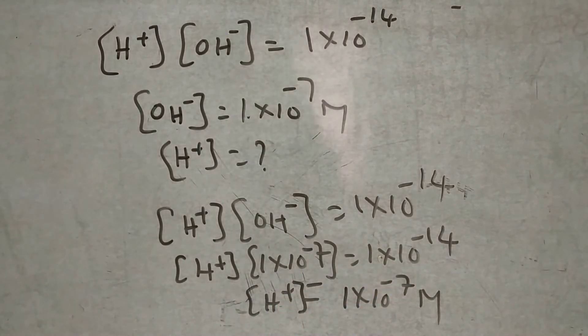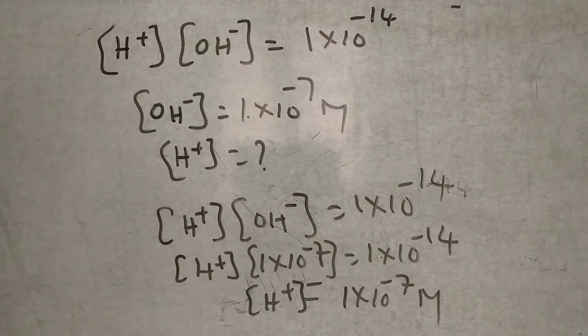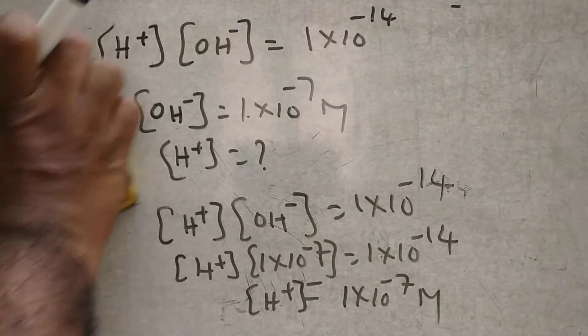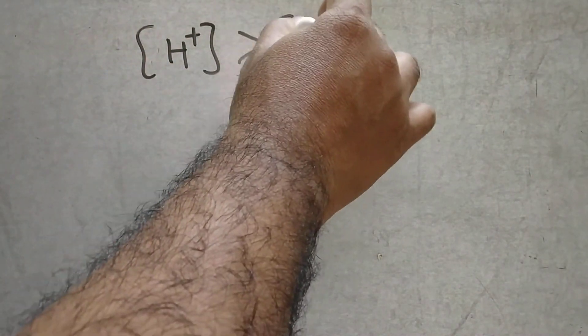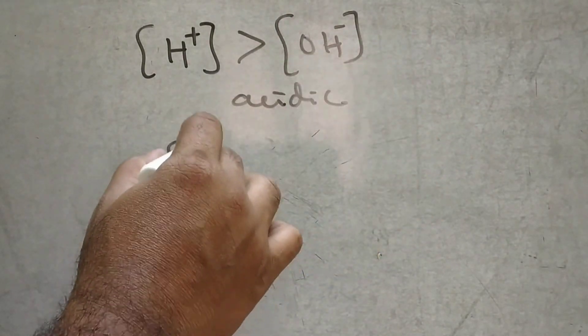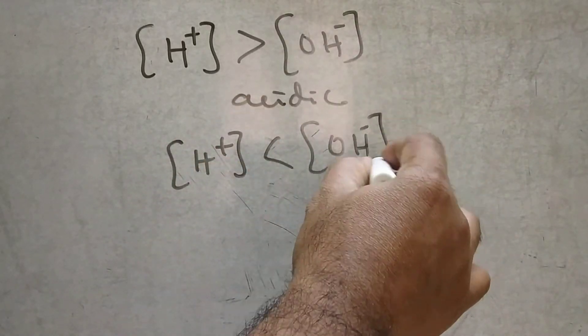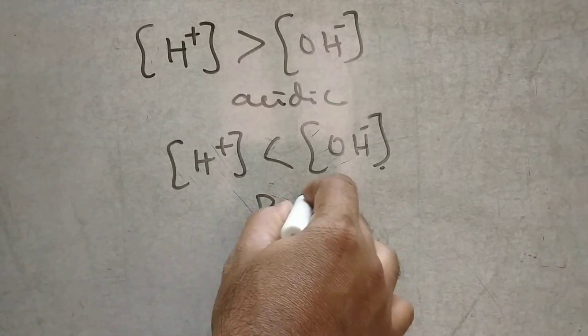Like this, you have to calculate the concentration of H plus ions and OH minus ions. Finally, if H plus ions are greater, we can call it as acidic in nature. Similarly, if OH minus ions are greater, then we can call it as basic in nature.